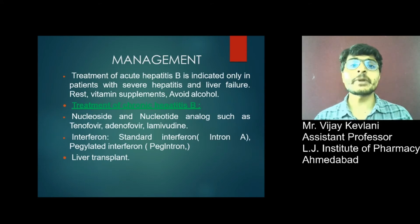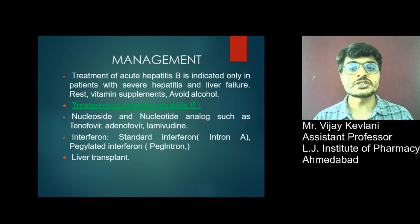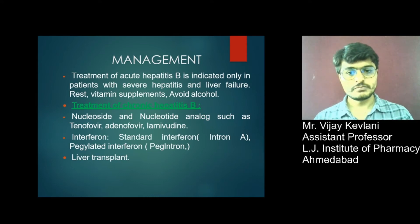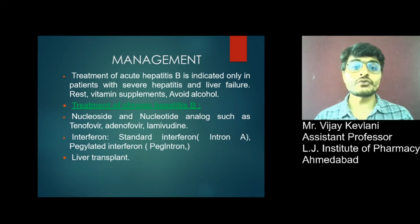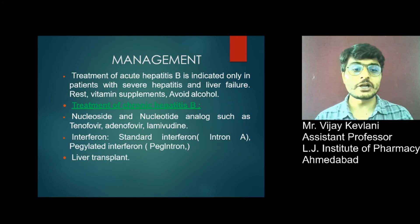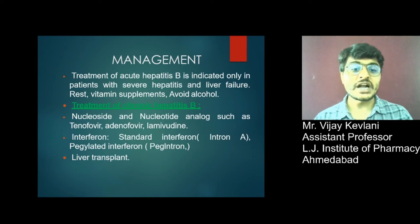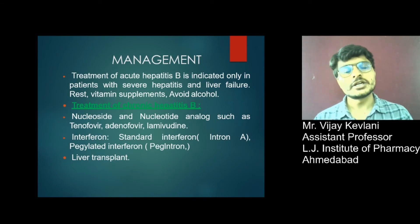Treatment of acute Hepatitis B is indicated only in patients with severe hepatitis and liver failure, along with vitamin supplements and avoidance of alcohol. Treatment of chronic Hepatitis B includes nucleoside and nucleotide analogs such as tenofovir, adefovir, and lamivudine. Interferon options include standard interferon and pegylated interferon, and in severe cases, liver transplant.